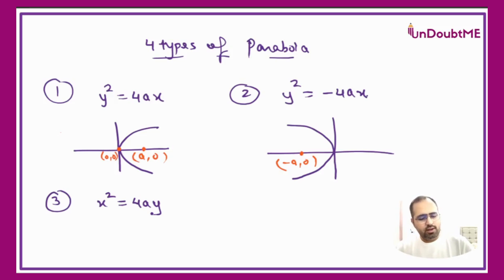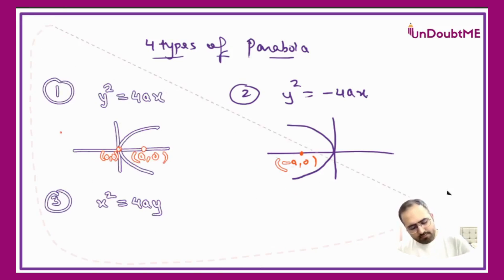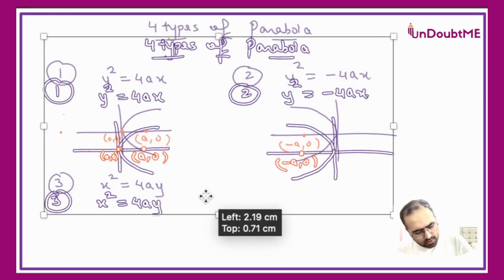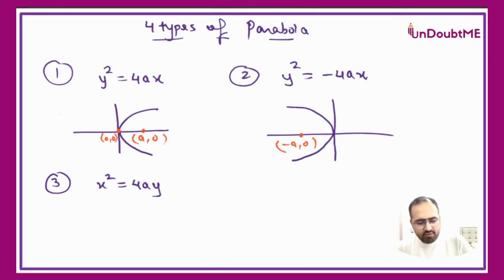So if we are switching x and y, then both x and y axis will also be switched. Just use that common sense. So x and y axis will be switched. This parabola is lying on x-axis; x² = 4ay will lie on y-axis, so it will look like this.